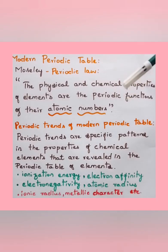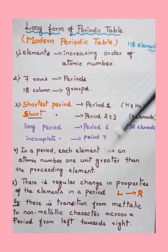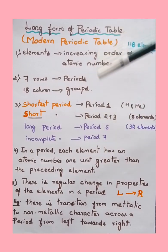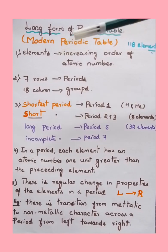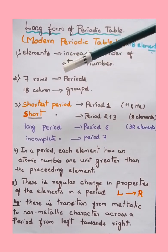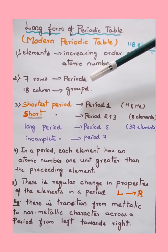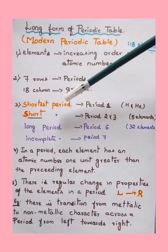The long form of the periodic table — the modern periodic table we use today — contains 118 elements. The elements are arranged in increasing order of their atomic number. There are seven rows called periods and 18 columns called groups. The shortest period is the first, containing only hydrogen and helium. The second and third periods have eight elements each.